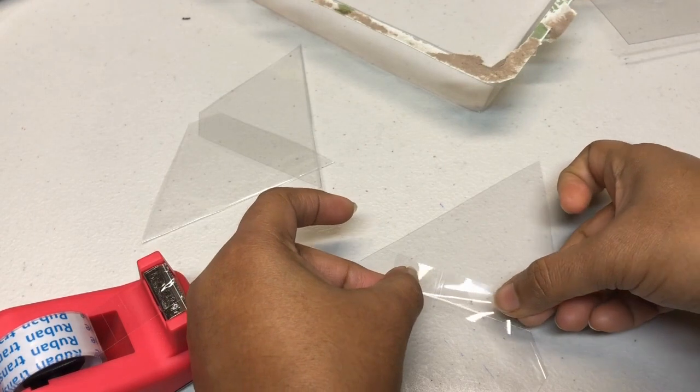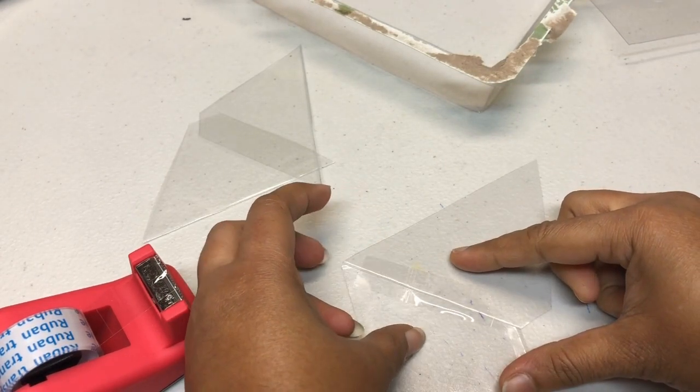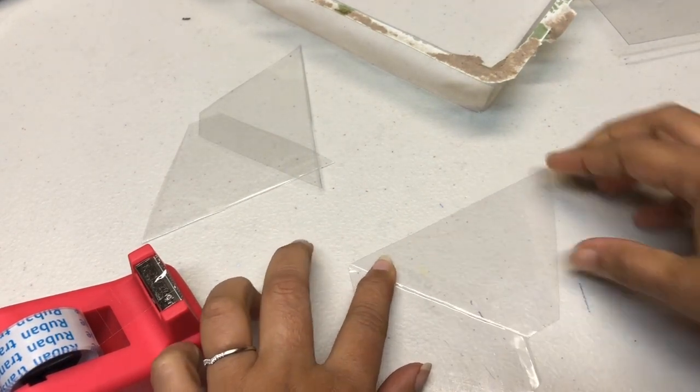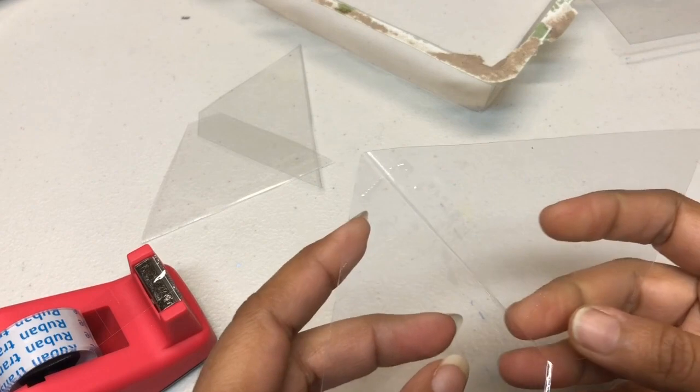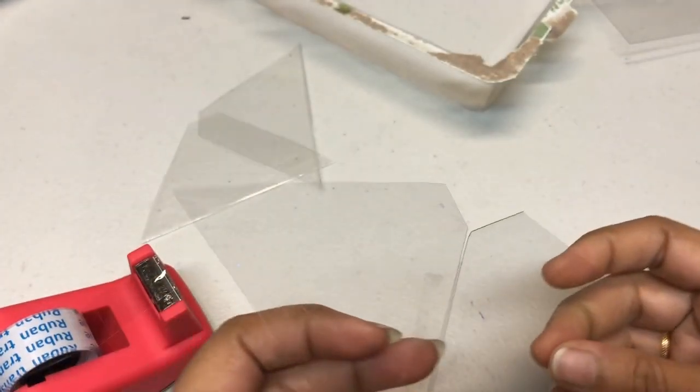Now use cello tape to attach your pieces. Make sure you align it properly, especially the smaller side. The broader side is okay, but the smaller side should be exactly aligned.